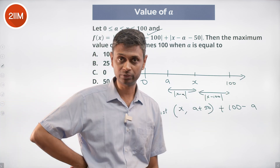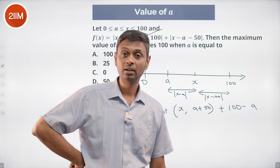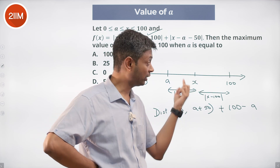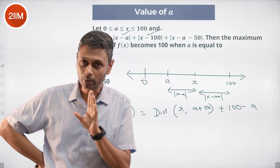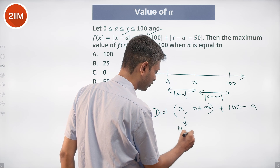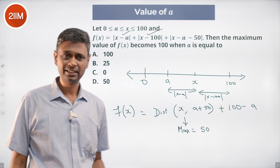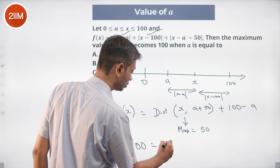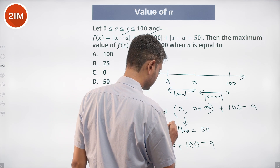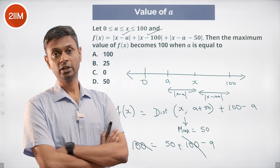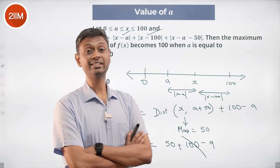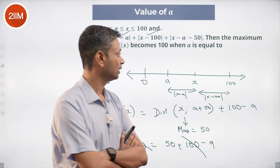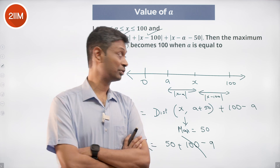If x is greater than a plus 50, we have the order: 0, a, a plus 50, x, with x at 100. In that case the distance between x and (a plus 50) cannot exceed 50 either, because a is at least 0. So the maximum of f(x) equals 100: that is, 50 plus (100 minus a) equals 100, giving a equals 50. With a equals 50, we have 0, 50, 100 on the number line.